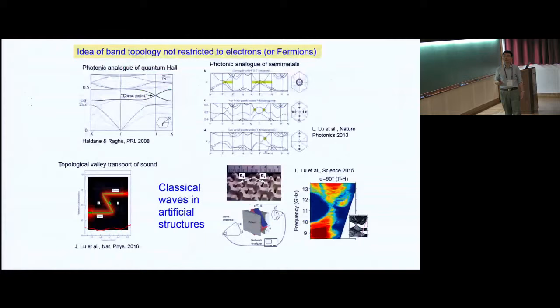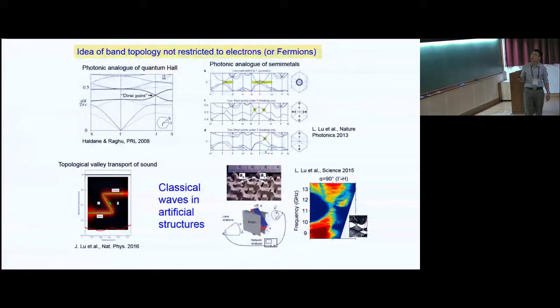But actually, the idea of band topology is, of course, as we have already heard from some of the tutorial talks, especially the one given by Gang last week, the idea of band topology is not restricted to fermions or electrons in general. So there are, in the early days, predictions of photonic analogues of quantum Hall, and also of topological semi-metals. And many of these proposals have actually been realized in artificial structures, like metamaterials showing a nice Weyl point. And also this mechanical system shows a topological vibration edge state.